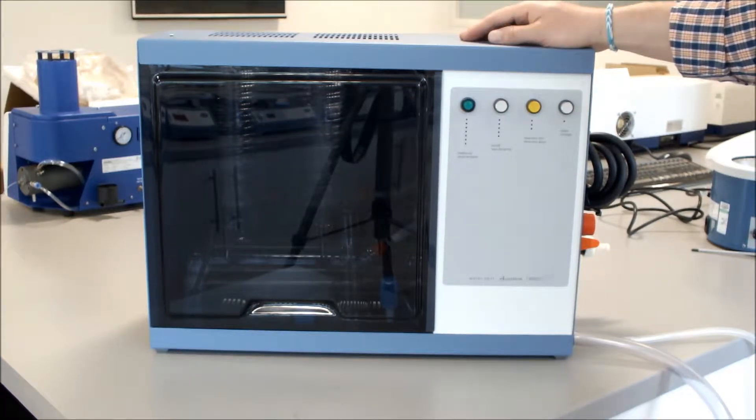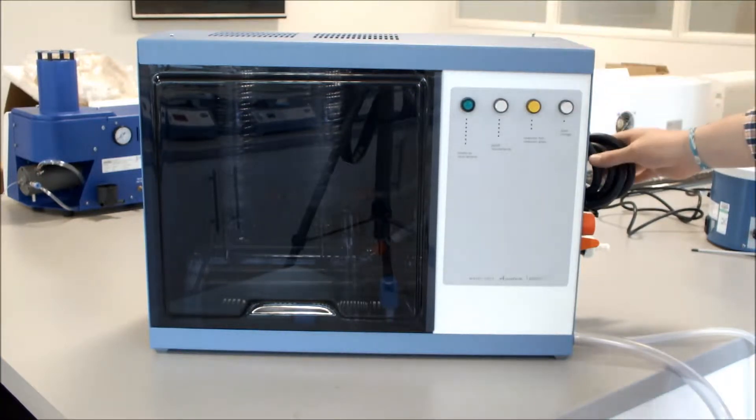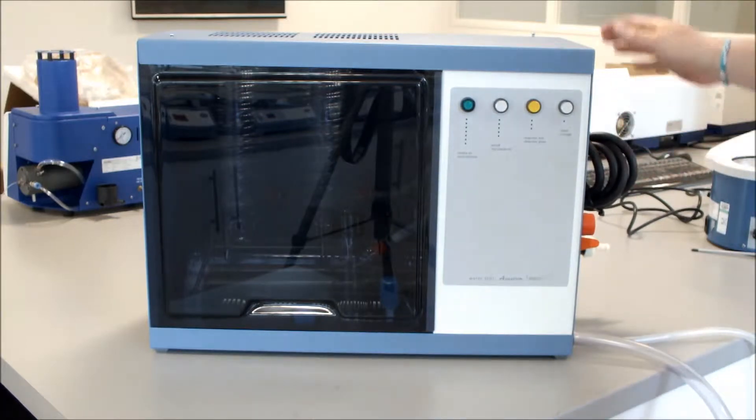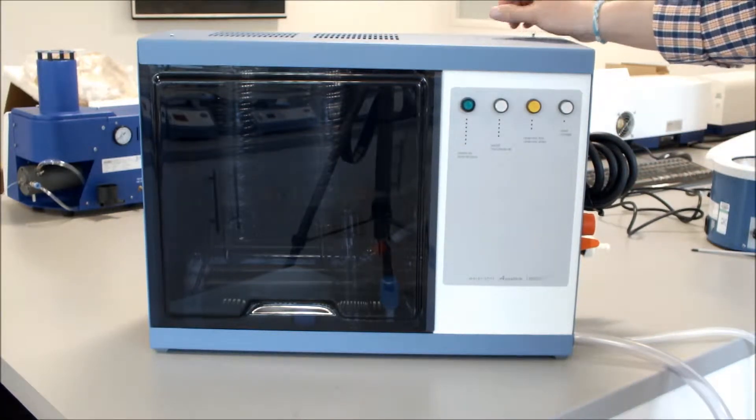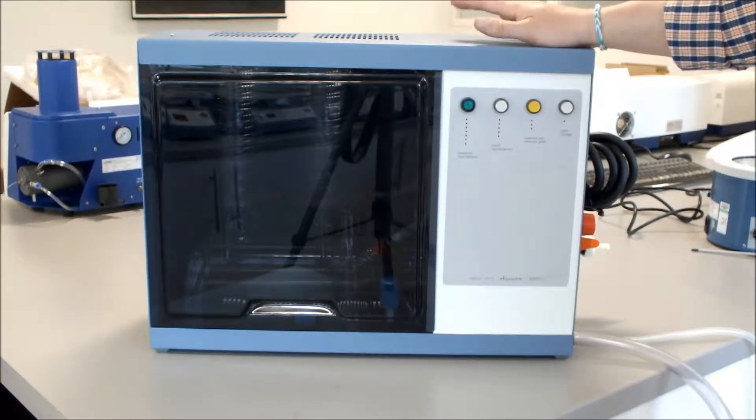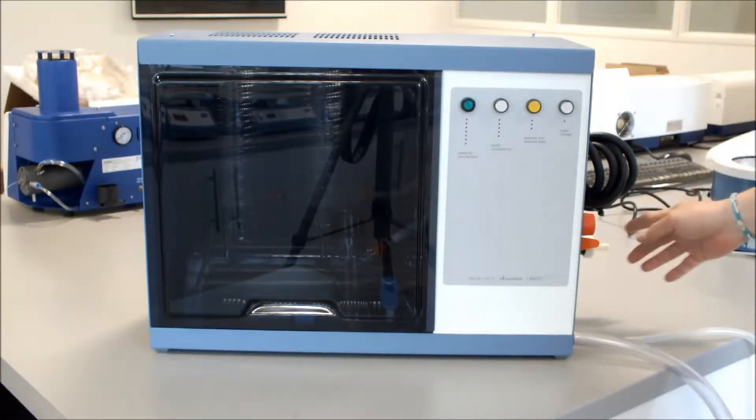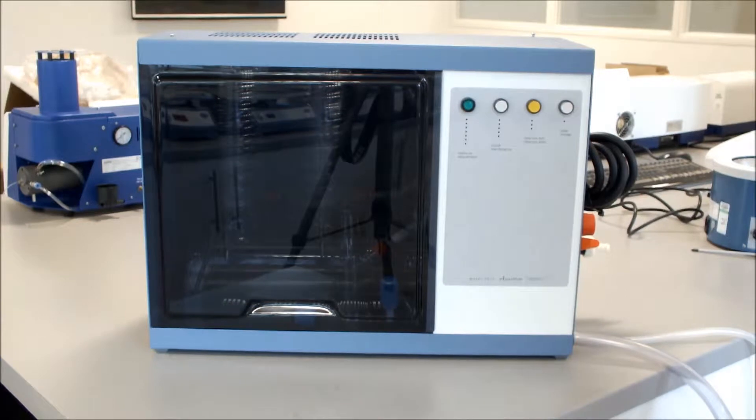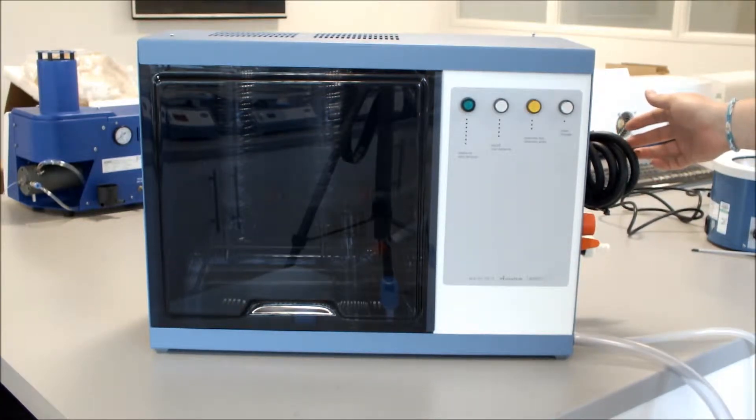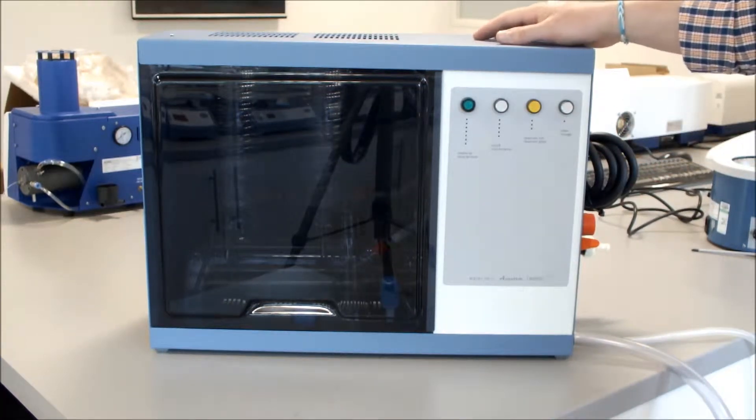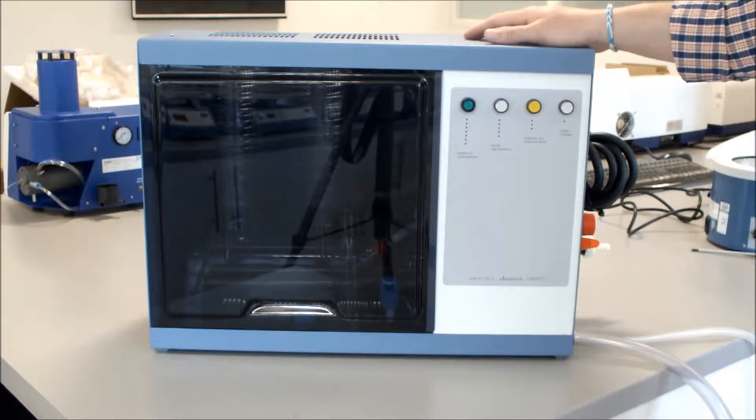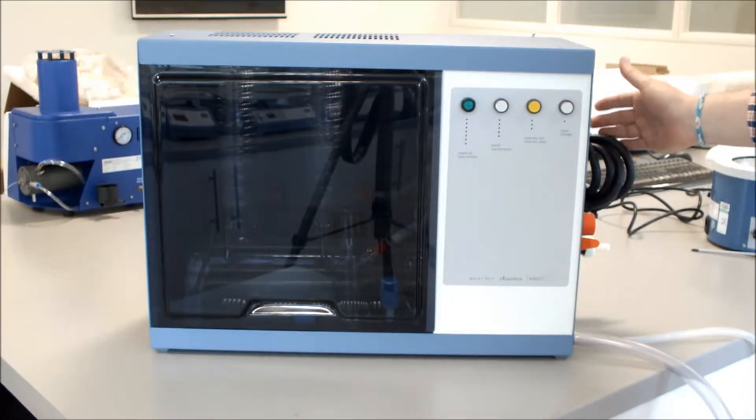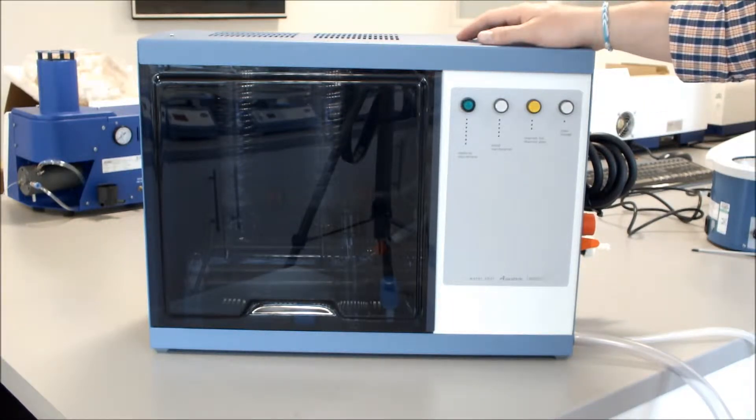The first thing we need to do is check that the electrics are disconnected from the unit and it is electrically safe to actually work on. There is no mains water connected, as you can see, no electrics connected. This is a new unit. Your unit is probably connected, so ensure that it is disconnected before you do any maintenance on it.